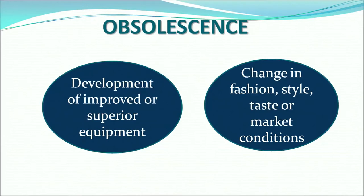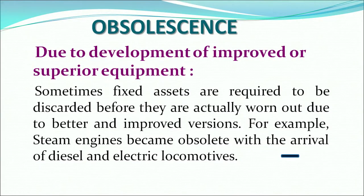The second cause of depreciation is obsolescence, which leads to a decline in the value of the asset for two reasons. First is the development of improved or superior equipment, and second is the change in fashion, style, taste, or market condition. Due to the development of improved equipment, earlier assets are discarded because a better version is now available. For example, steam engines became obsolete with the arrival of diesel and electric locomotives, or colour TVs replaced black and white TVs.